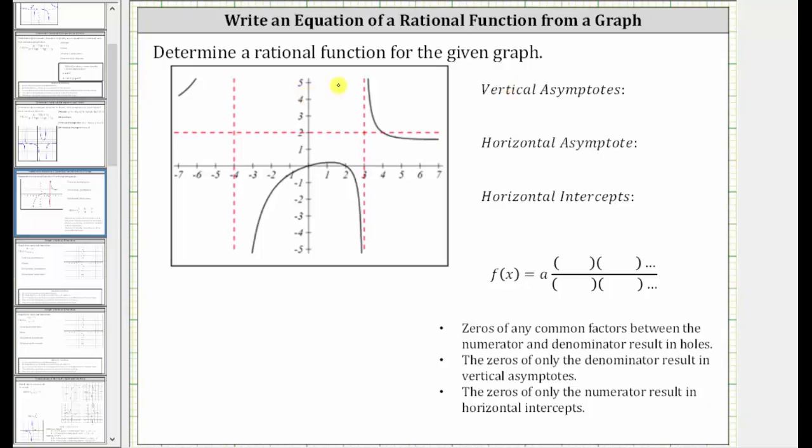We're asked to determine a rational function for the given graph. Let's begin by determining the equations of the vertical and horizontal asymptotes, as well as the horizontal intercepts.